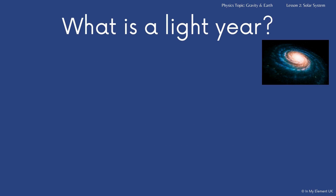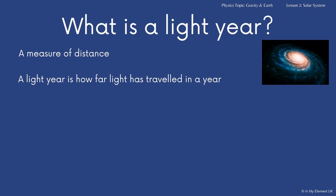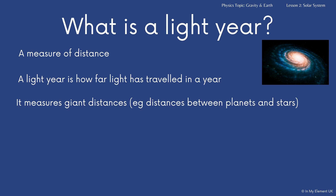A measurement you need to be aware of is what a light year is. A light year is a measure of distance — it's how far light has travelled in one year. The light year can then be used to measure huge distances, so distances between planets and stars. It's worked out that one light year is 9.5 million million kilometres long.